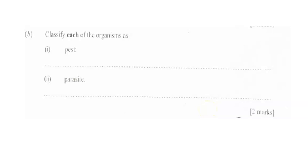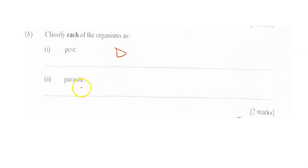Question B asks us to classify each of the organisms as pest or parasite. For pest, it is organism D — that is weevil. And then parasite is organism C, which is tapeworm.